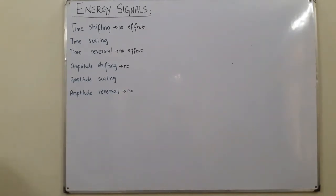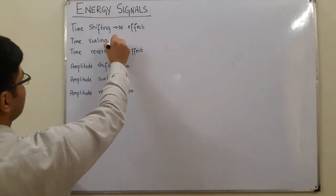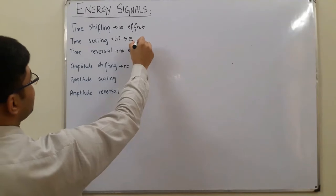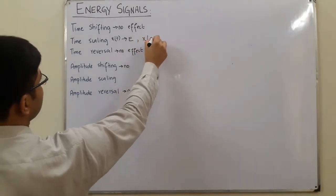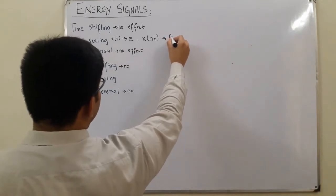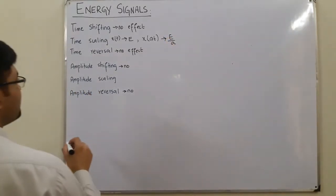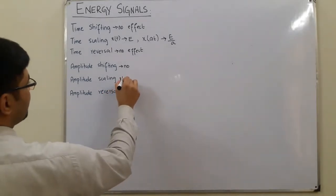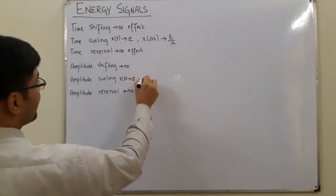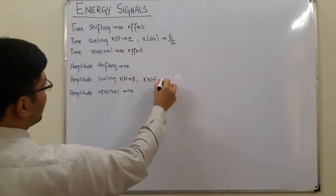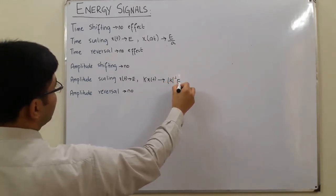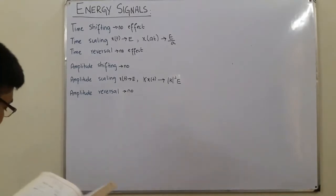If the original signal is x(t) and it has energy E, what happens if you time-scale it — that is, x(at)? This signal would have energy equal to E divided by a. Similarly, for amplitude scaling, if the original signal x(t) has energy E, then the amplitude-scaled signal k·x(t) would have energy equal to |k|² multiplied by E.